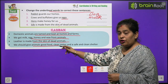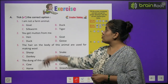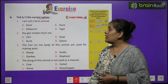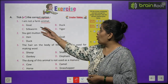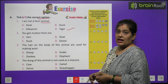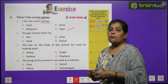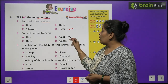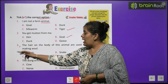We should give animals good food, clean water and a safe and clean shelter. Now time to do exercise. Take the correct option. I am not a farm animal — main farm animal nahi huu. Options: goat, duck, silkworm and tiger. In mein se farm animal korn nahi hai? Tiger. Tiger kya hai? Wild animal. Number two: You get mutton from me — mujhse aapko meat milta hai. Options: hen, duck, goat and geese. Hame meat milta hai goat se. Number three and four you will do by yourself.